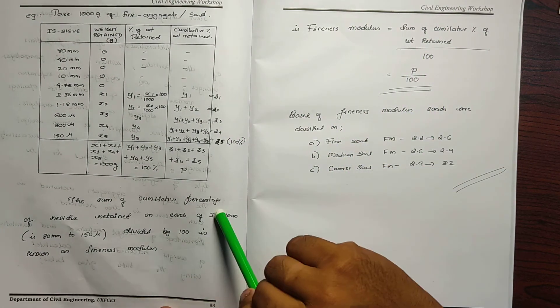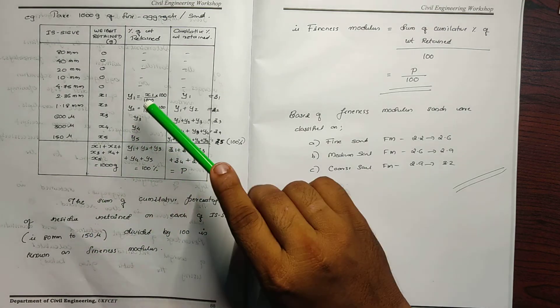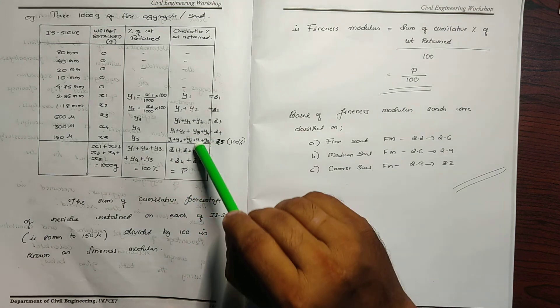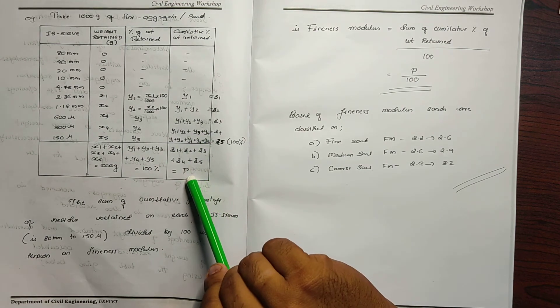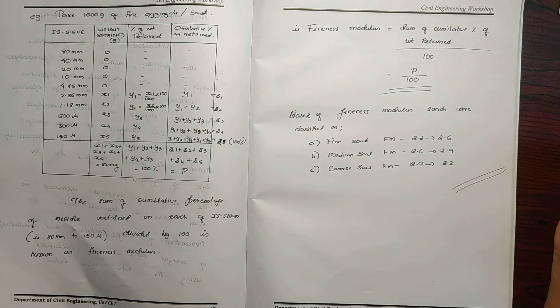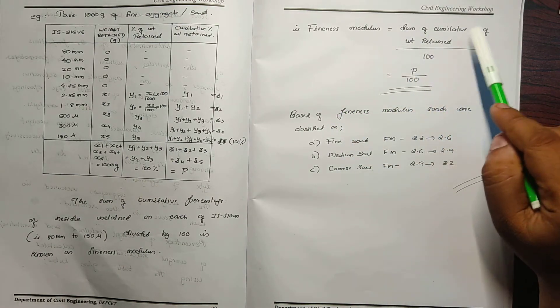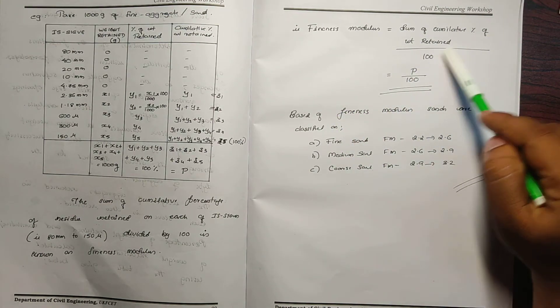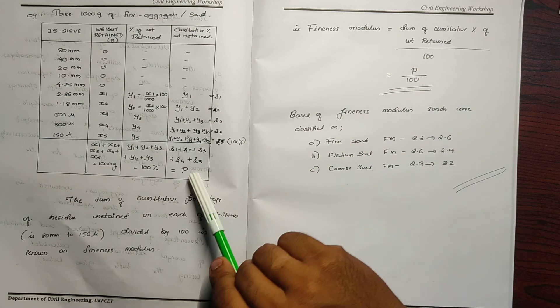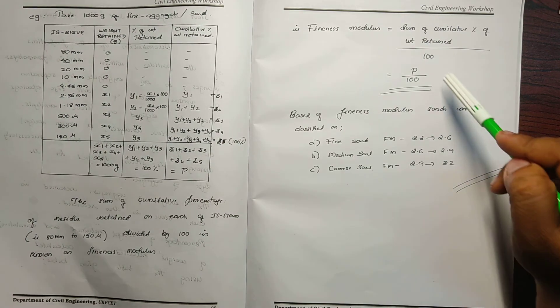The sum of cumulative percentage of residue retained on each IS sieve, divided by 100, is known as fineness modulus. Fineness modulus equals the sum of cumulative percentages of weight retained divided by 100. The cumulative percentage is Z2 plus Z3 plus Z4 plus Z5, which is P. So fineness modulus equals P divided by 100.